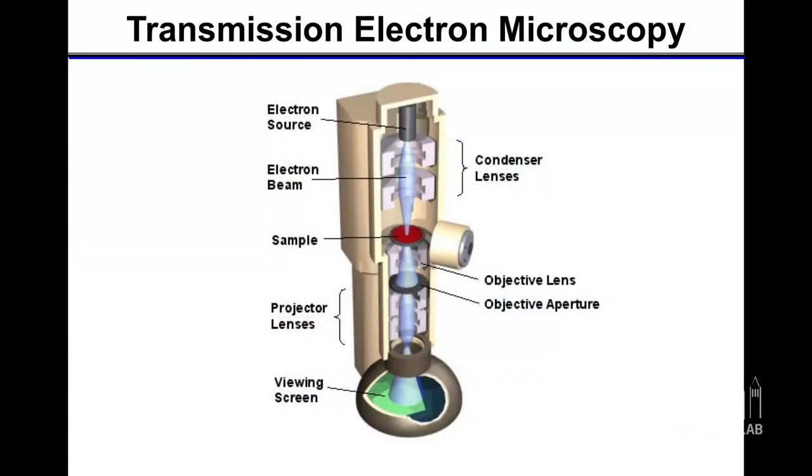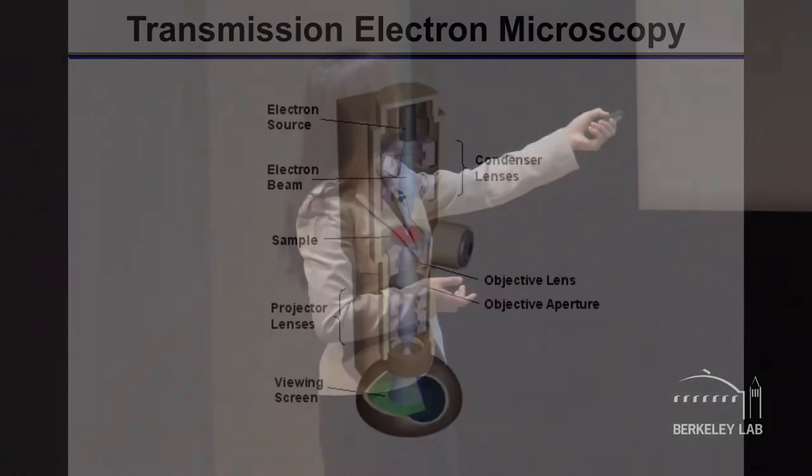A transmission electron microscope uses a high-energy electron beam and focuses the beam using a series of magnetic lenses in high vacuum for imaging. Compared to a light microscope, the electron microscope has much better resolution to see small things — atoms — because the electron beam has very small wavelengths. However, in conventional imaging using a transmission electron microscope, because of the high vacuum environment, we image materials by drying them out or freezing them.